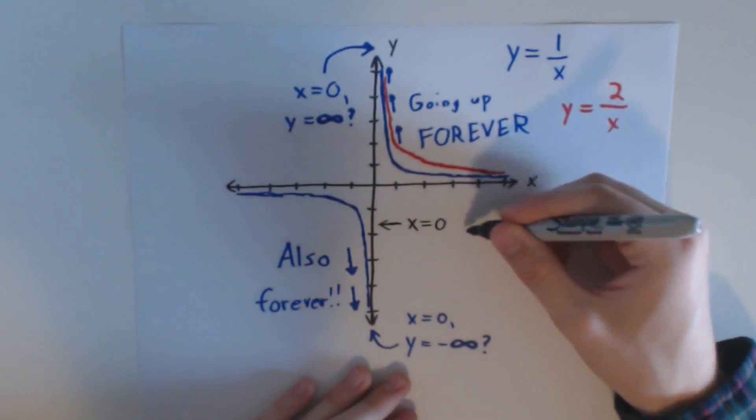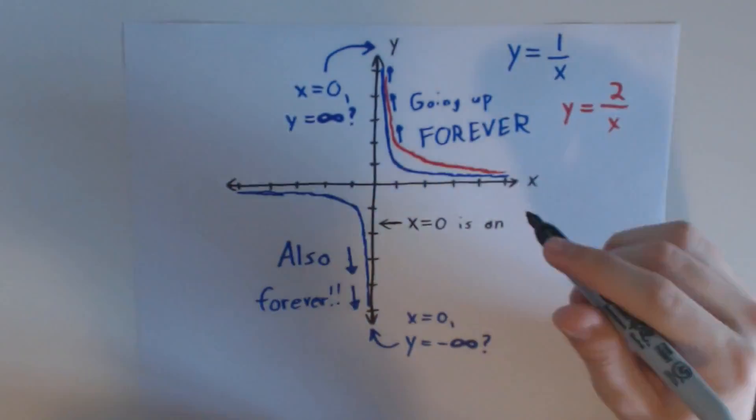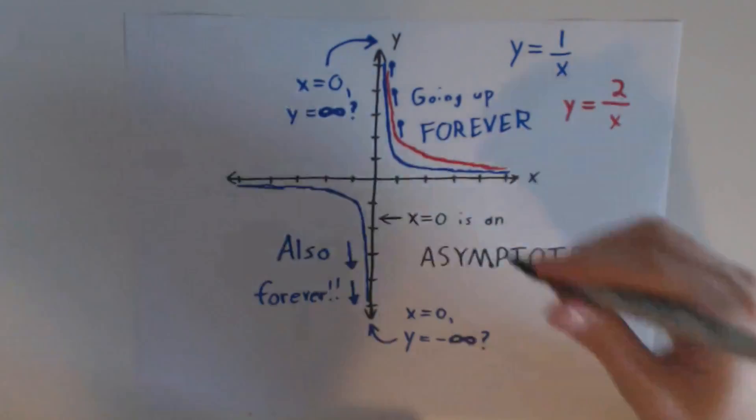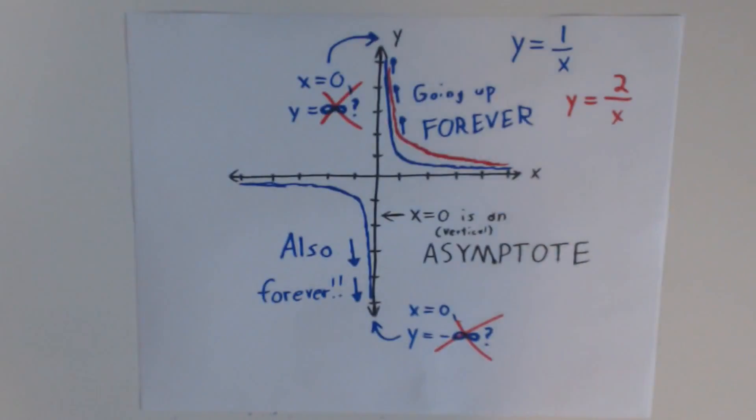So where do the two graphs meet? They don't, actually. This is called an asymptote, specifically a vertical asymptote, which basically means there's no right answer at this point.